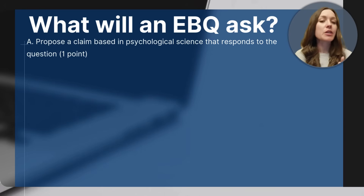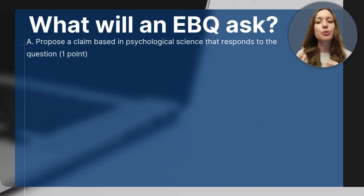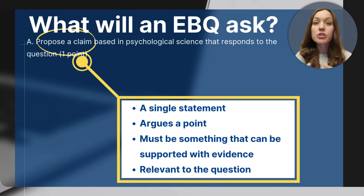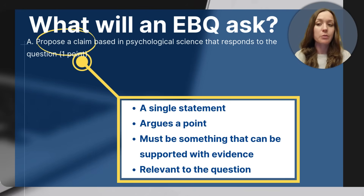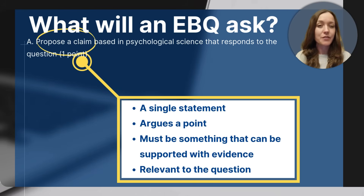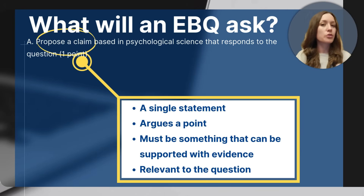So what will an EBQ ask you to do? Well, in Part A, the EBQ will ask students to propose a claim based in psychological science that responds to the question. Your claim should be one single sentence, but this sentence is an important one because it will direct the focus of the rest of your response. The claim will need to argue a point, meaning someone could potentially agree or disagree with it. A claim isn't just an opinion — it's a belief statement that you'll need to support with specific evidence from the sources provided. You will likely need to begin reading the sources before you generate a claim.